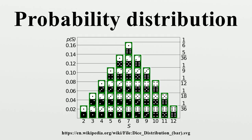If the random variable is real-valued, the cumulative distribution function gives the probability that the random variable is no larger than a given value. In the real-valued case, the CDF is the integral of the probability density function, provided that this function exists.